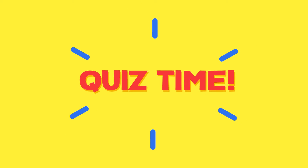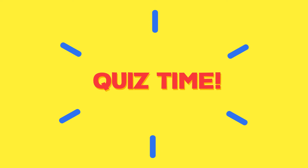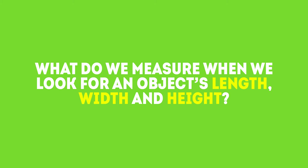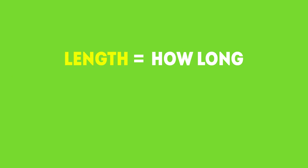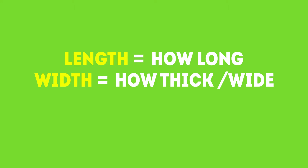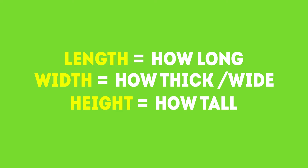It's quiz time! What do we measure when we look for an object's length? How about its width? And its height? That's correct! For length, we measure how long an object is. For its width, how thick or wide. And for its height, how tall.